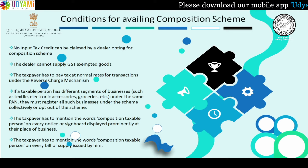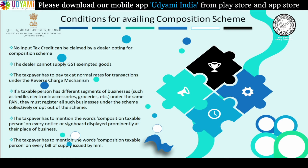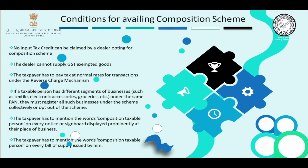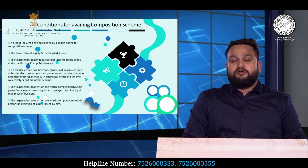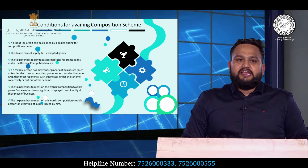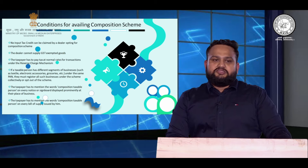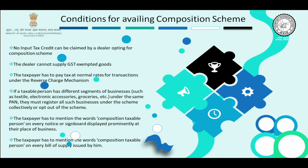There are certain conditions to comply with under the composition scheme. First, I can't take input tax credit. The government has provided a scheme where I pay GST at a very low rate, but the condition is I can't avail input tax credit. Point number two: I can't sell any exempt goods. There are many exemptions available in GST, and if I am dealing in those along with taxable goods, I can't keep availing the exemption under the composition scheme.